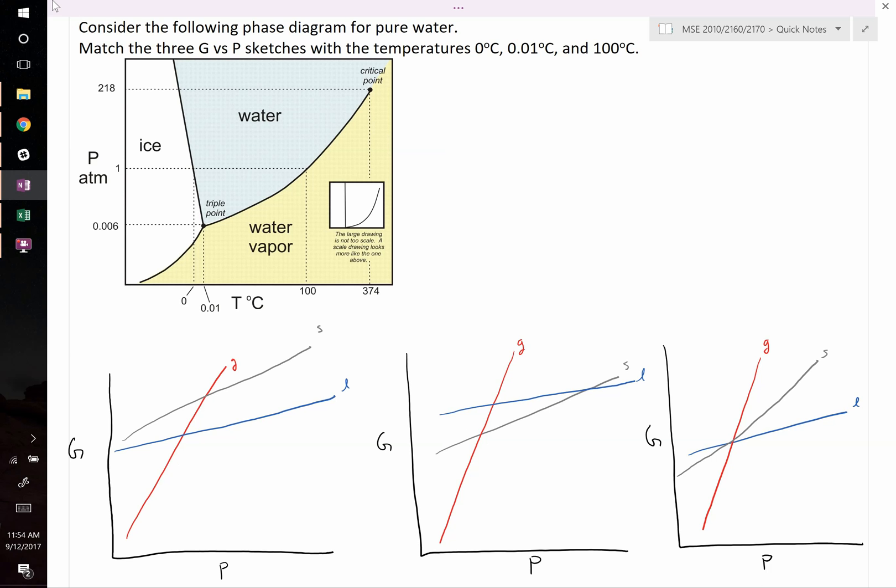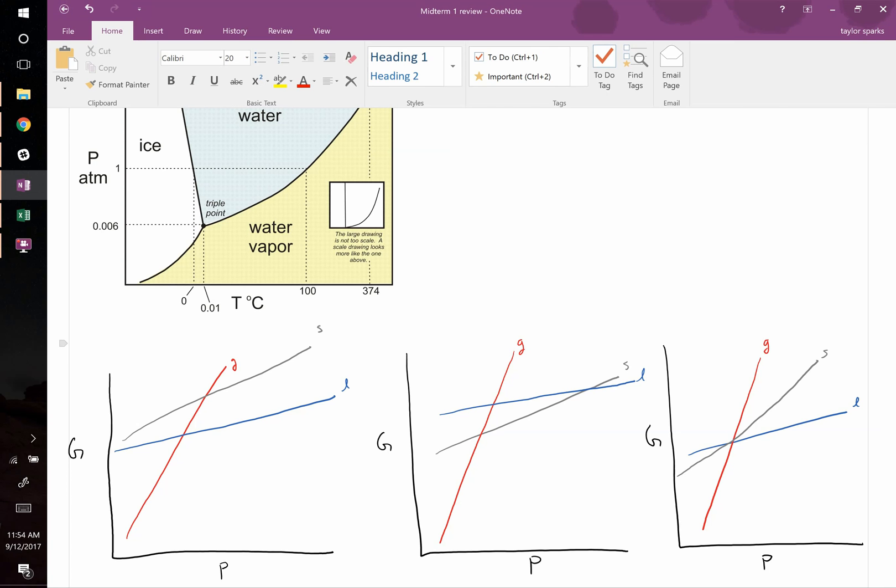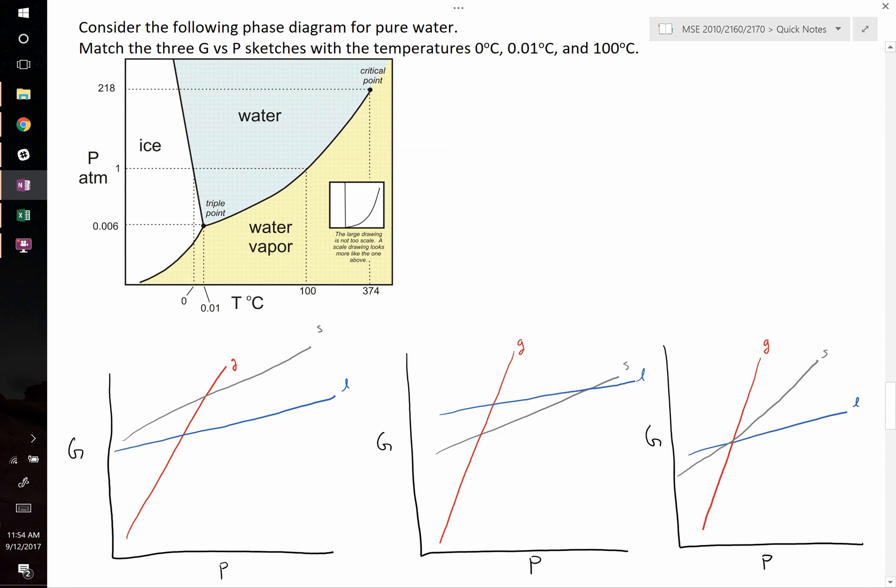With these type of questions, here's the approach. When you're showing G versus P, you're essentially showing three different phases and you're plotting free energy. How do you know which diagram is going to be thermodynamically stable? The way to do that is to look at which one is the lowest at any given pressure.